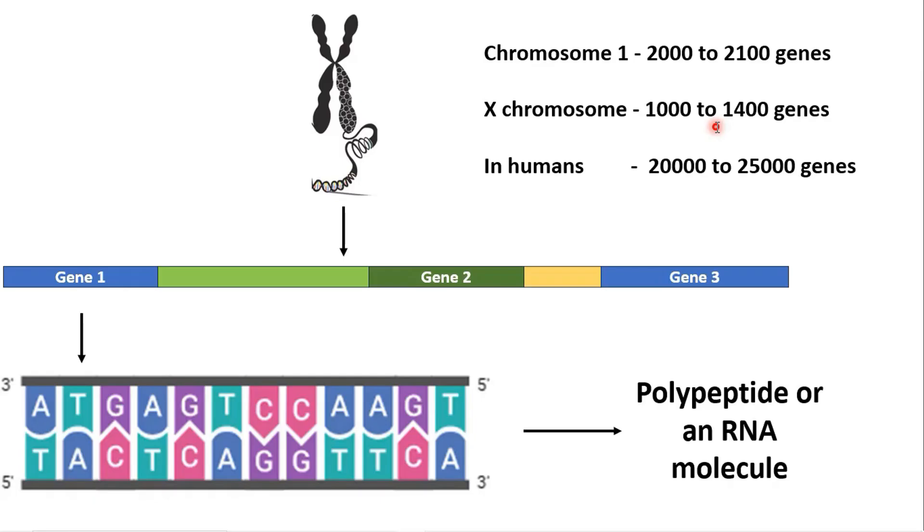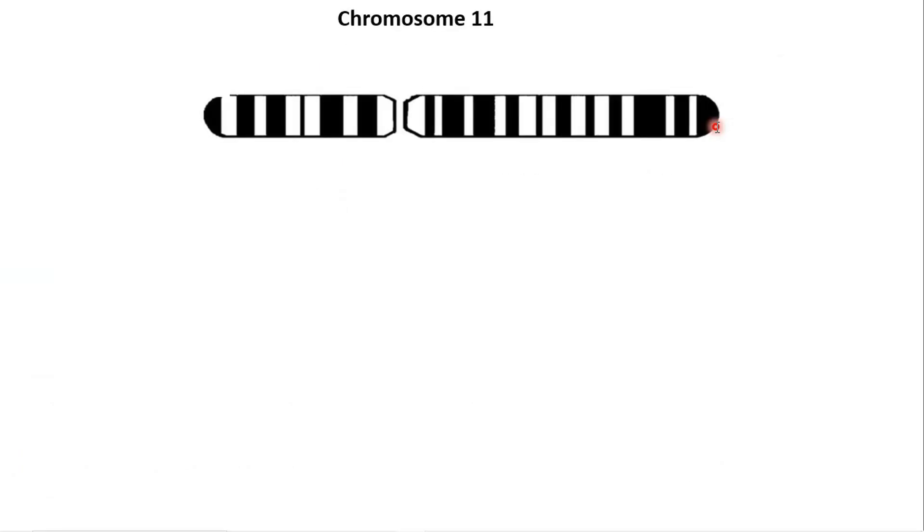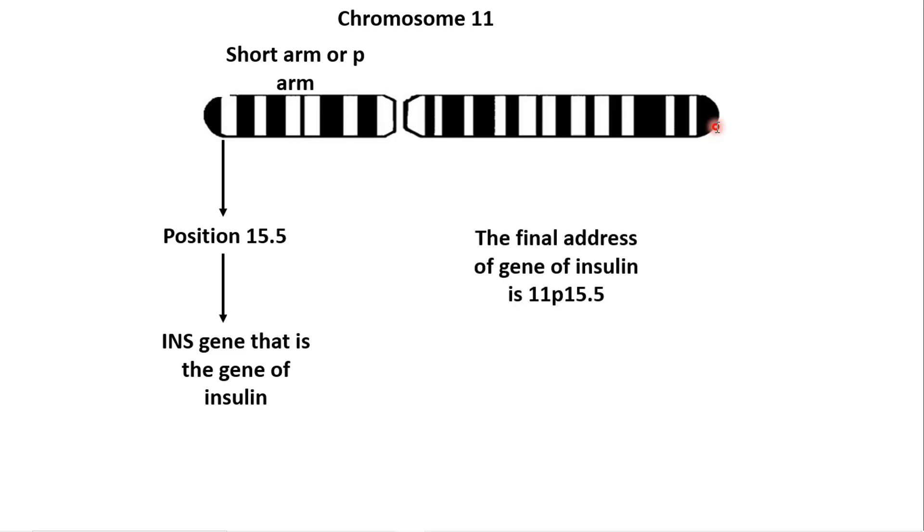Now let us end our discussion by coming back to our friend insulin. Since insulin is a protein, it must have its gene located somewhere. Now let's see that address. We have chromosome number 11 of humans here. This is the short arm or p-arm of chromosome 11. On this p-arm there is a location denoted as 15.5 and at this position we have the gene INS or the gene of insulin. So the final address of the insulin gene is 11p15.5.